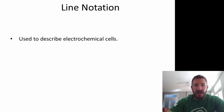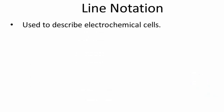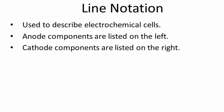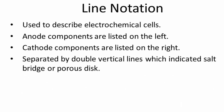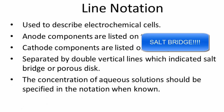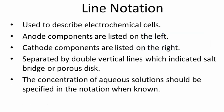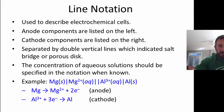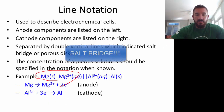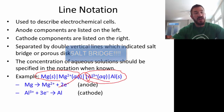A line notation is simply a way to describe an electrochemical cell. The anode compartments are listed on the left. The cathode compartments are listed on the right. They're separated by double vertical lines, which indicates a salt bridge or a porous disc. And the concentration of the solutions can also be written as part of that notation. For example, in this one, the anode would be the magnesium — we see that's on the left. We have the salt bridge, and then we have the cathode with the aluminum on the right. So that's line notation.